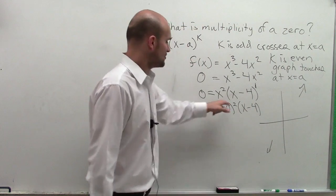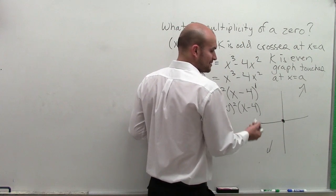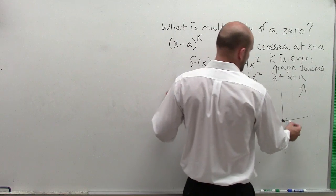So we have two zeros, right? We have a zero at x = 0, and one at x = 4. So marking these on the graph: 1, 2, 3, 4.